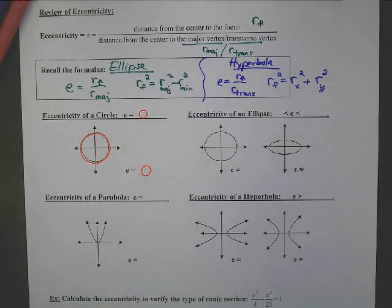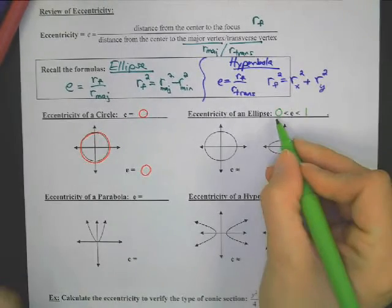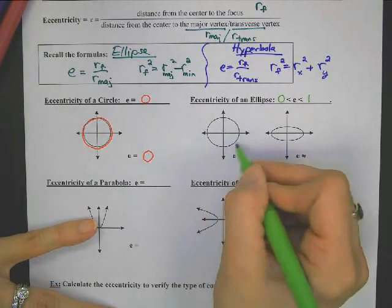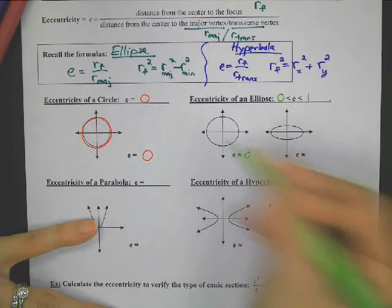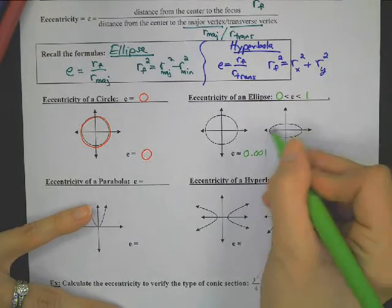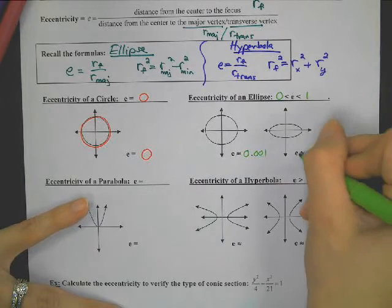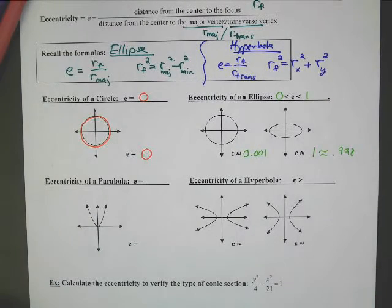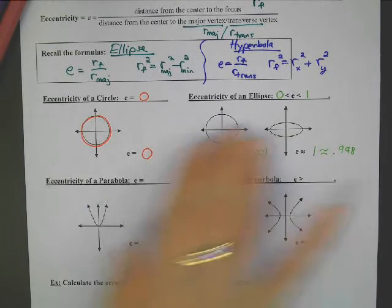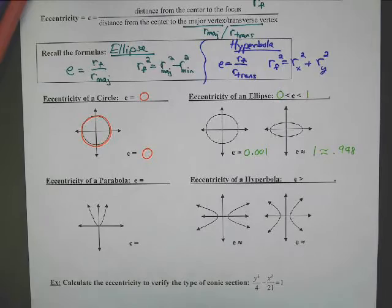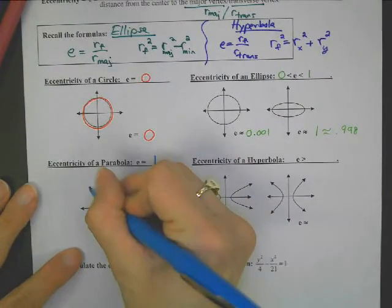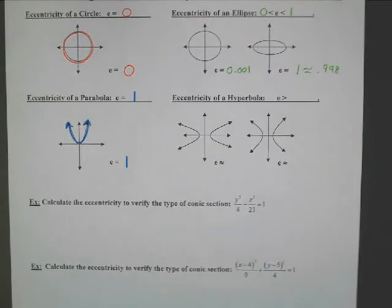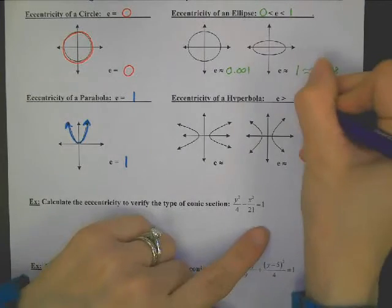Eccentricity of an ellipse is going to be between zero and one — not equal to zero, not like a circle, and not equal to one. A very circular ellipse has eccentricity close to zero, maybe 0.001. The flatter the shape, the closer it is to one, maybe 0.998. If you're zero, you're a circle. If you're equal to one, then you're a parabola — all parabolas have eccentricity exactly one. The hyperbola eccentricity is greater than one.